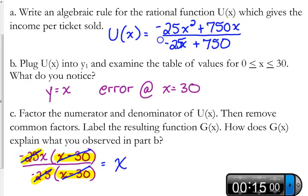That's why the table of values looked like the function y equals x. All the x and y values were the same because it simplified down to the function of just plain x. But, we have the error at 30 because that's where the denominator equals 0.